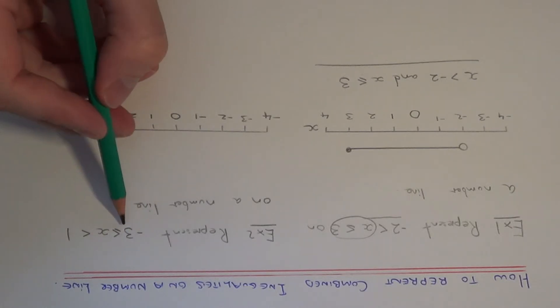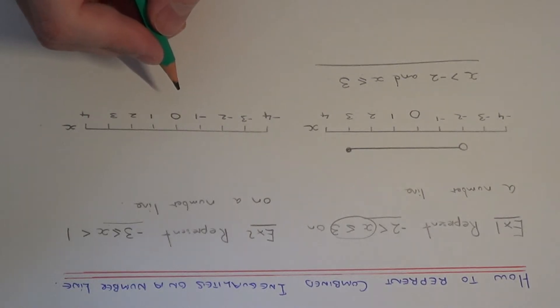Again let's think about what this means. The first bit then is minus 3 is less than or equal to x. So this actually means x can be more than or equal to minus 3.